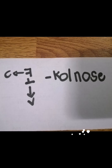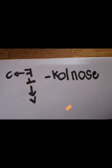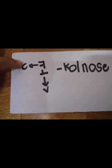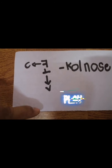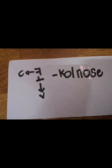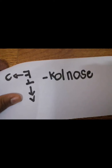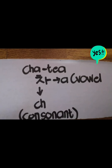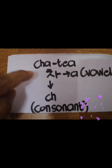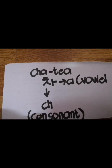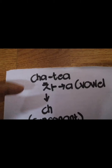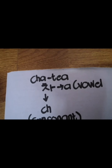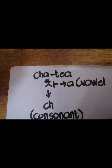The first example is 코 which means nose. The letter K sound is the consonant and the letter O is the vowel, so 코 is a two-letter word meaning nose. The next example is 차 meaning tea, where CH is the consonant and A is the vowel — that is also a two-letter word.